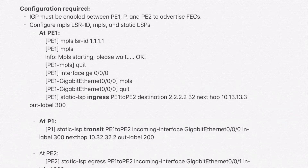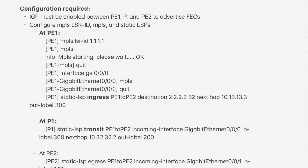The first configuration required is the IGP — the Interior Gateway Protocol must be enabled between PE1, P, and PE2 to advertise the network 2.2.2.2 from PE2 to P to PE1. The IGP can be OSPF, ISIS, or any IGP routing protocol. The most important thing is to receive this network in the routing table — the RIB at the control plane — before we can establish the required label for this network.